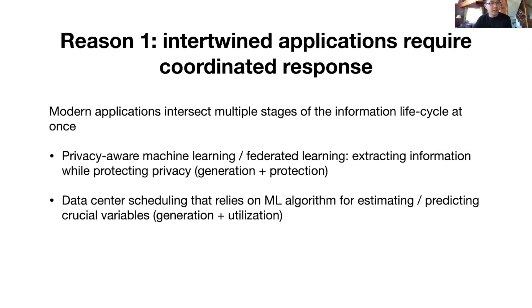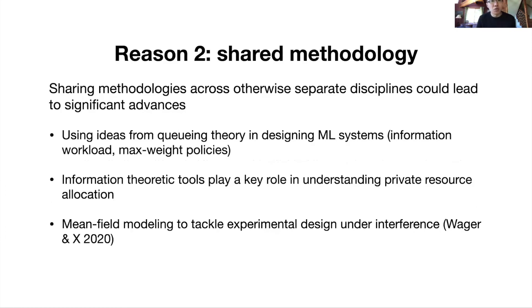My answer will be, I do think there is tremendous benefit to such an information-centric framework of thinking, and here are some reasons as to why. Reason number one might be the most obvious one, which is modern applications are increasingly intertwined. Even though we did separate the question into three different areas, most applications in fact intersect multiple stages of the information lifecycle or even all of the stages. For instance, if you look at the recent interest in privacy-aware machine learning or federated learning, we're essentially dealing with a problem where we're trying to extract information while protecting privacy at the same time, a combination of the generation and protection in one model itself. Also you can look at modern algorithms for scheduling jobs in data centers, and oftentimes those algorithms might rely on sophisticated machine learning algorithms to infer the state of the queues, which otherwise would have been too expensive to directly estimate.